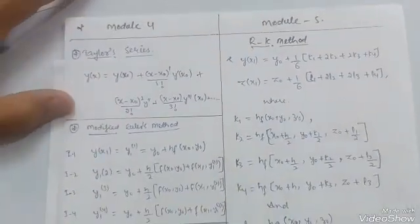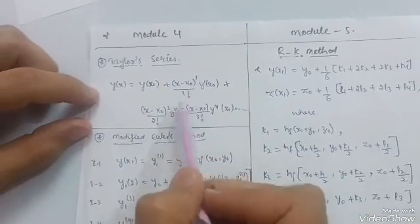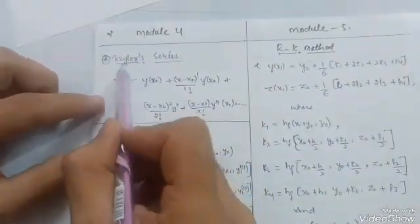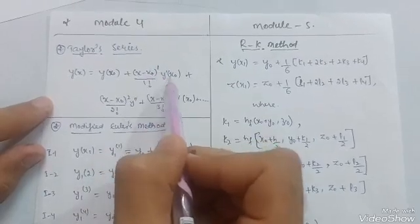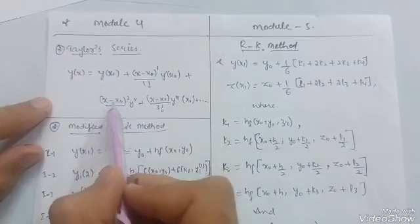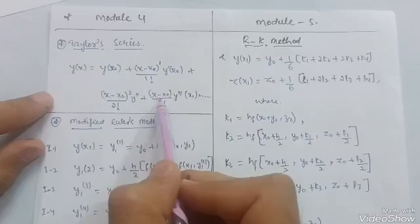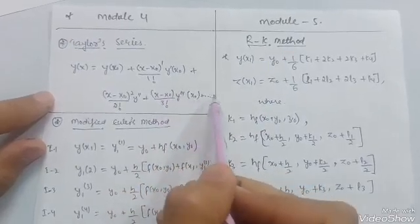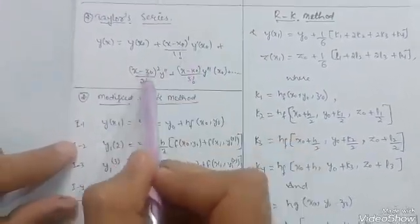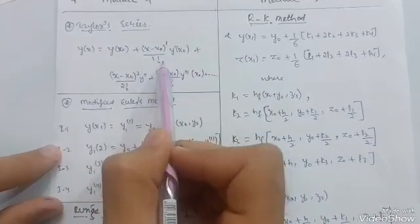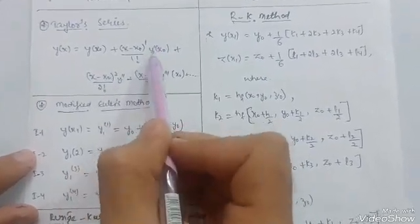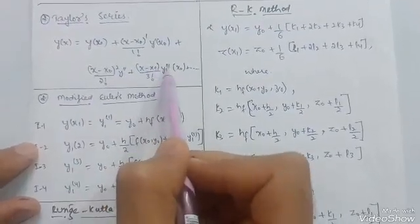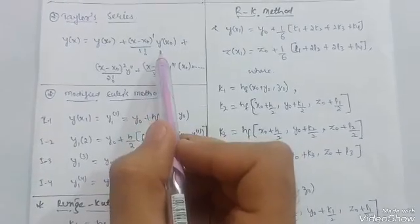Module 4 is the most important — you can easily get 20 marks here. The first concept is the Taylor series: y(x) = y(x₀) + (x − x₀)¹/1! · y'(x₀) + (x − x₀)²/2! · y''(x₀) + (x − x₀)³/3! · y'''(x₀) + ... It is easy to remember: (x − x₀) stays the same, factorials increase as 1!, 2!, 3!, and differentiation increases as y', y'', y'''.